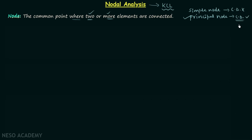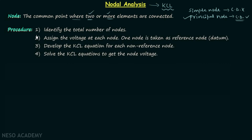In order to understand the use of KCL equations in nodal analysis, we need to understand the steps required to perform nodal analysis. In step number one, we identify the total number of nodes, meaning we identify the total number of principal nodes.